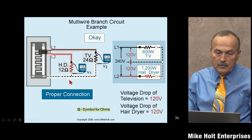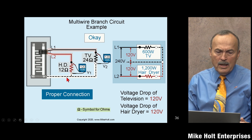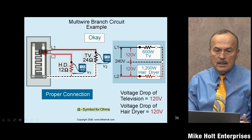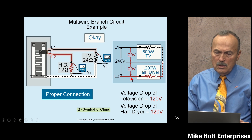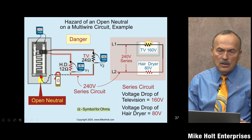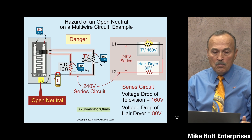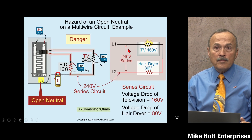Here's how a multi-wire branch circuit works: line one goes to a TV, line two goes to a hair dryer, sharing a neutral. The TV is 600 watts, the hair dryer is 1200 watts. Line one to neutral is 120 volts, line two to neutral is 120 volts, line one to line two is 240 volts. Everything is fine — until an electrician disconnects the neutral and sees a little spark. That changes it from a multi-wire branch circuit into a series circuit.